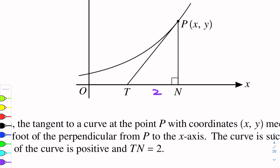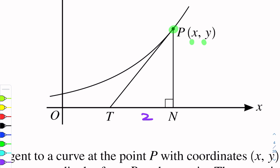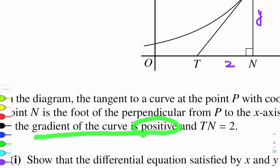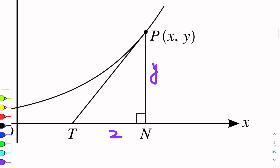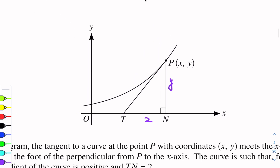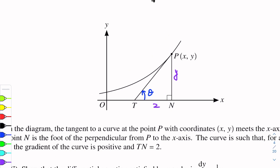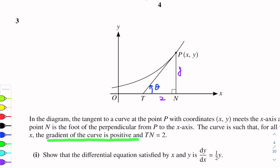Since the coordinates of point P are (x, y), the side PN will be y. PN is y. The gradient of the curve is positive, which means that this tangent line makes an acute angle with the positive x-axis. So let this angle be theta. This is an acute angle.